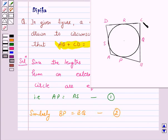Again, two tangents drawn from C, CR and CQ, so their lengths are also equal. CR is equal to CQ. Let us give this as number 3.